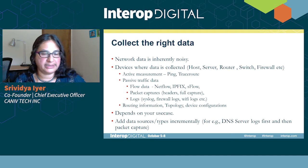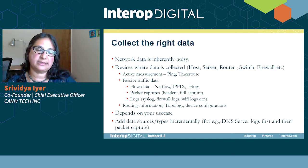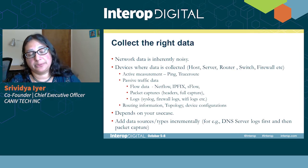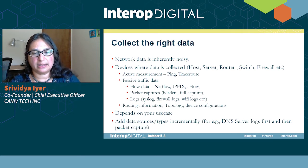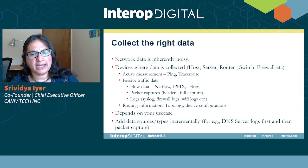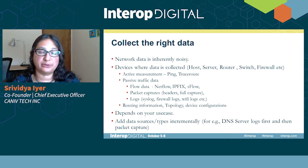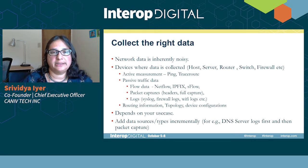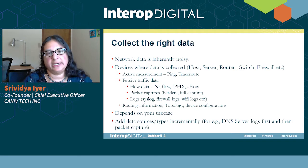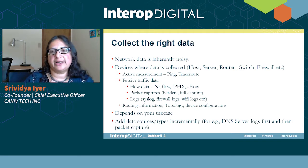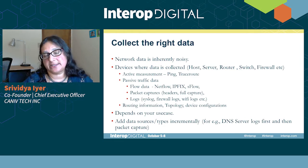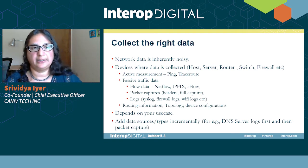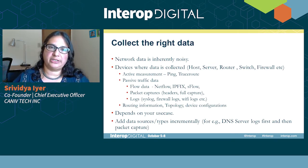When you need multiple types of data to do analysis, start with one type of data and then add on incrementally. One example we came across is someone trying to analyze DNS server issues — it's good to start with the DNS server log for a month and see what it's saying. Then if you want additional context, you can add packet capture to get additional insights. The more data types you add, the better insights you get, but you can start with one type and add on as needed going forward.